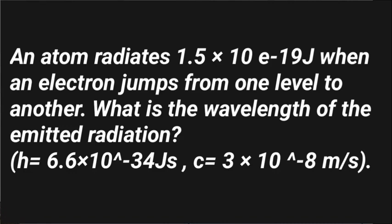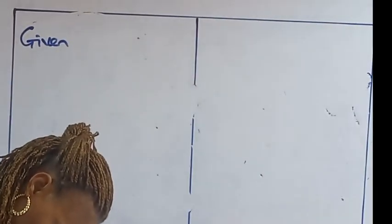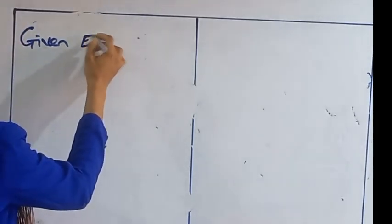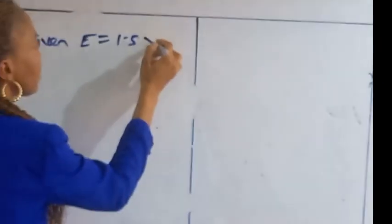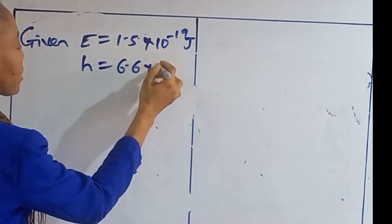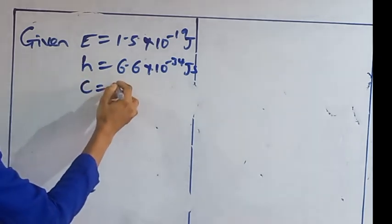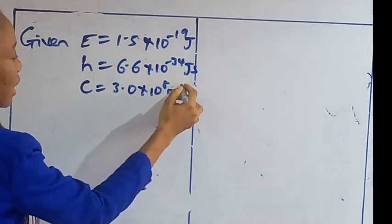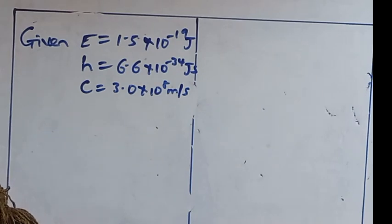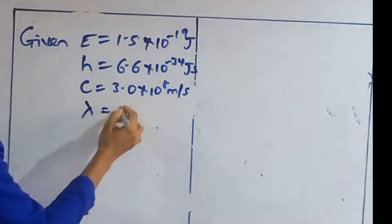An atom radiates 1.5 times 10 to the power of minus 19 joules when an electron jumps from one level to another. What is the wavelength of the emitted radiation? Planck's constant is 6.6 times 10 to the power of minus 34 joule seconds, and the speed of light is 3.0 times 10 to the power of 8 meters per second. We are looking for the wavelength.